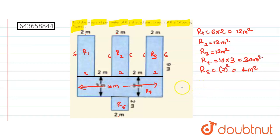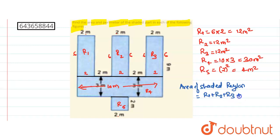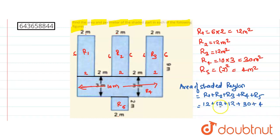Adding all regions together: area of shaded region equals R1 plus R2 plus R3 plus R4 plus R5, which is 12 plus 12 plus 12 plus 30 plus 4. That gives 36 plus 4 is 40, plus 30 is 70 square meters. So the area of the shaded part is 70 square meters.